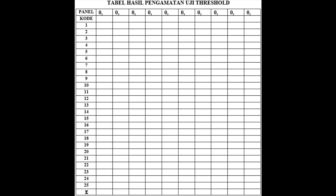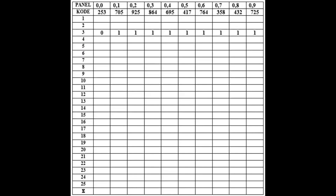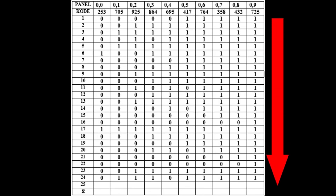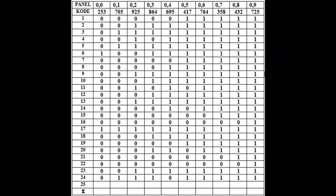Setelah itu, kita masuk ke dalam tabel hasil pengamatan kelompok. Di sini saya merupakan bilik ketiga, maka isi pada bagian panelis ketiga, input seluruhnya sesuai dengan kode sampel. Pada pengujian ini terdapat 24 panelis. Jika datanya telah terisi seluruhnya, kita jumlahkan dari atas ke bawah dari masing-masing kode, sehingga didapatkan hasil seperti ini.